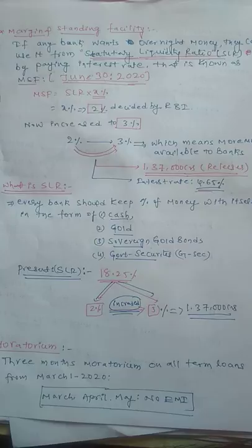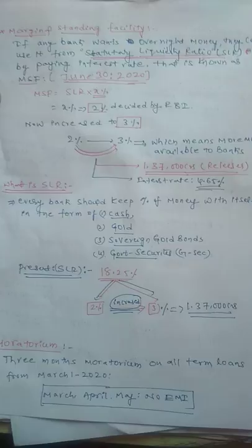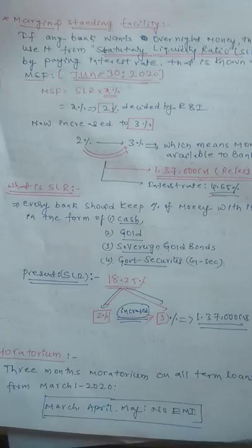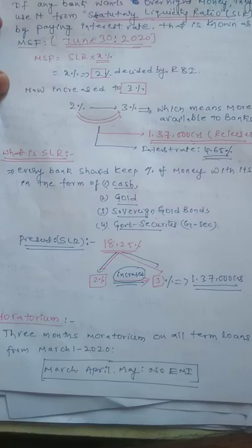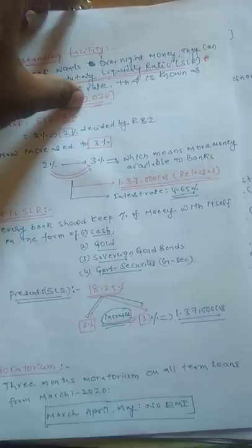Next is the moratorium. There is a three-month moratorium on all loans to help revive the economy and support customers. From March 2020, for three months covering March, April, and May, EMIs are deferred. This is one of the important decisions taken by RBI.